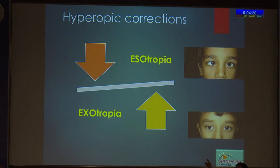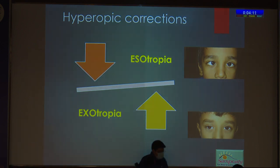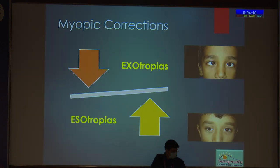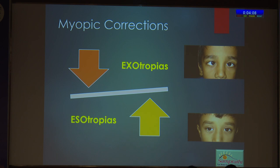Pediatric trial frames and trial racks are very useful for refraction, and the importance of cycloplegic refraction cannot be undermined. It's also important to remember that refractive error correction alters strabismus and always may not be for the better — sometimes you may have an opposite effect. That's why it's always very important to check the muscle balance in each and every child before doing refractive correction.